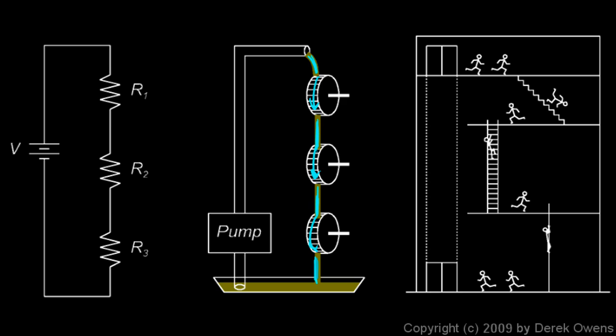And these could be anything besides resistors. They could be light bulbs. They could be motors. They could be toasters. Anything. But they're connected in series, and some of the energy gets lost in each one of them. Now, it doesn't necessarily divide evenly. We might not know exactly how much energy is lost in each resistor, but we know that the total energy lost in all three has to equal the energy provided by the battery.